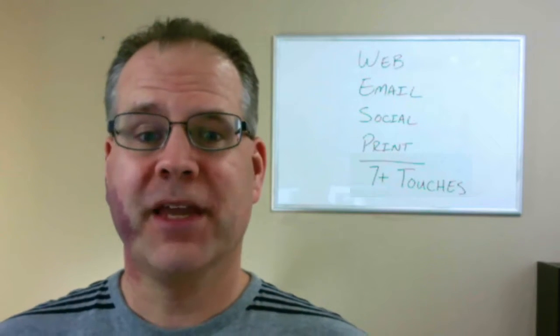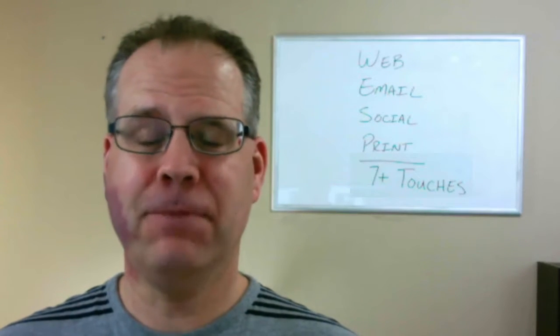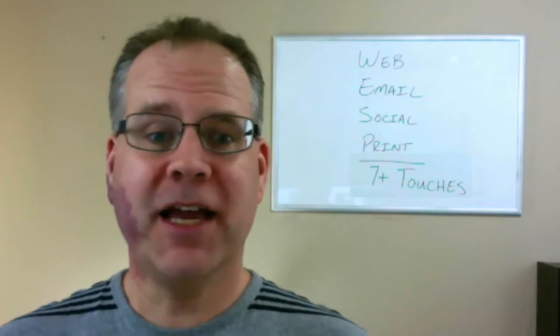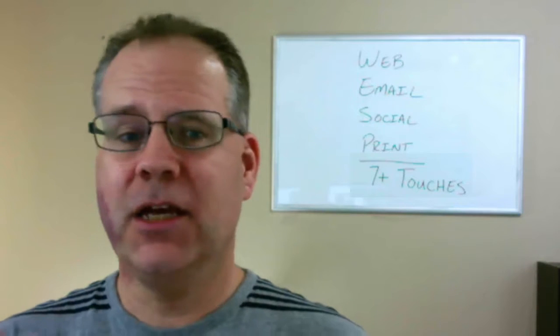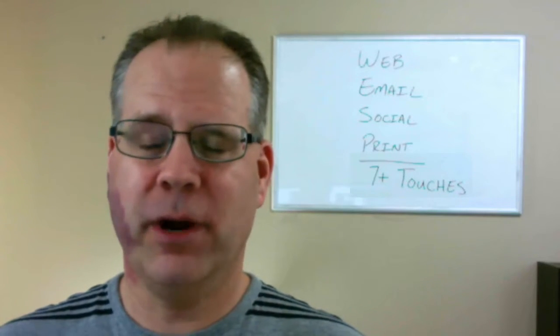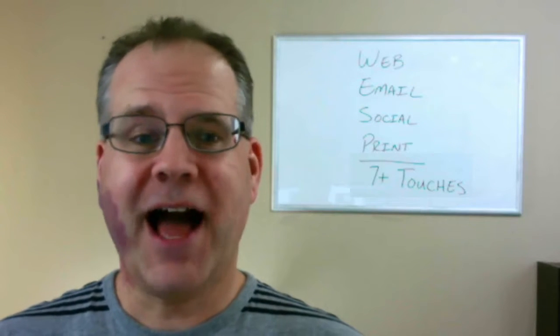So what you need to think about in terms of those ways you're presenting info is how can we help get people over that line of seven touches in our communications. Because realistically, you and a few people on staff are probably the only ones who are going to see 100% of what you're putting out. The majority of people living busy, crazy lives are going to see 50-60% of what you're sharing. So we need to think about how can we calendar things out and plan things in such a way that we get enough touches for each person across multiple channels.